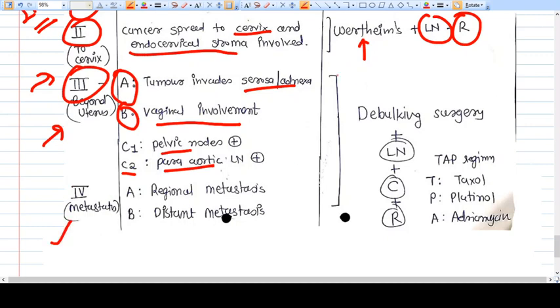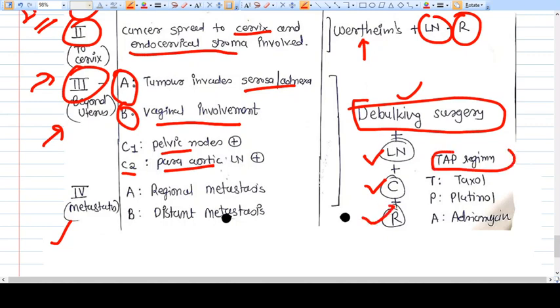In all this stage 3 and stage 4, you have to go for debulking surgery. You must do debulking surgery. You go for lymph node dissection and histopathological examination. You will also go for chemotherapy and radiotherapy is also there.